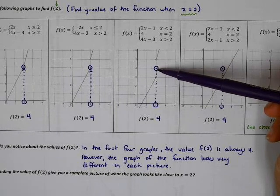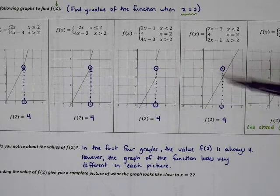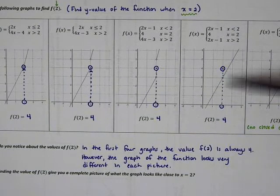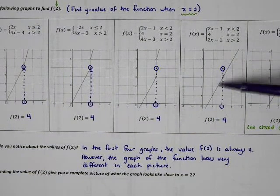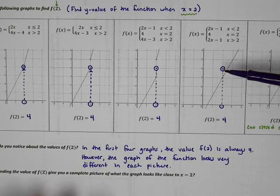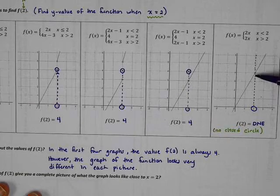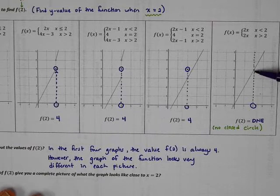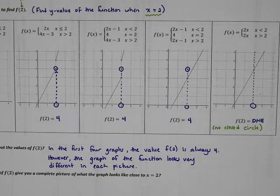In this piecewise function, the two pieces connect at an open circle, and the closed circle is somewhere else entirely. And in this piecewise function, the pieces connect at an open circle, and there is no closed circle anywhere else.